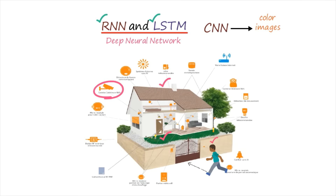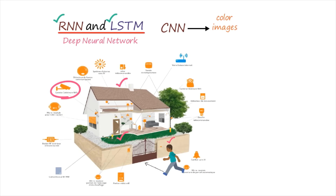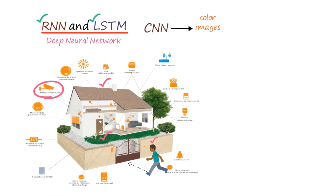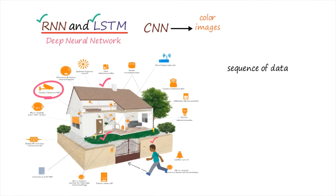This is the most important point: RNN and LSTM work on time series data, or more precisely, they are used for data which has a sequence. Whenever you have a sequence of data, these two networks are useful. Here in this project, what we are going to predict is the motion — and how to predict the motion? By depending on the previously stored motion sequence.